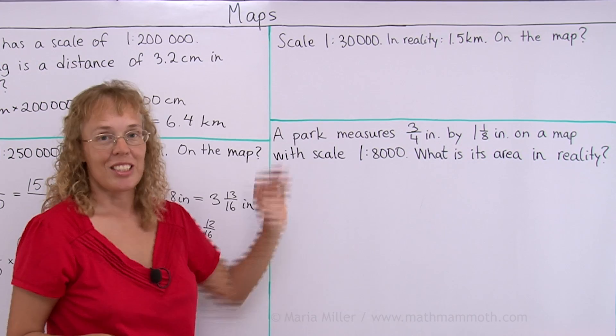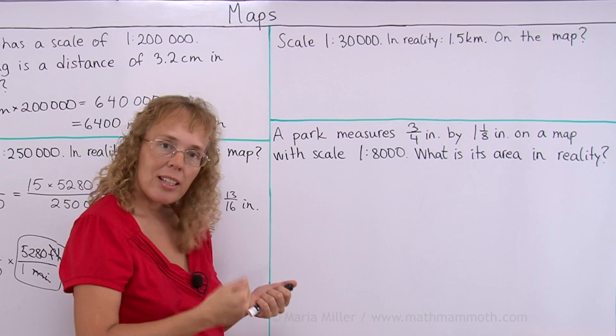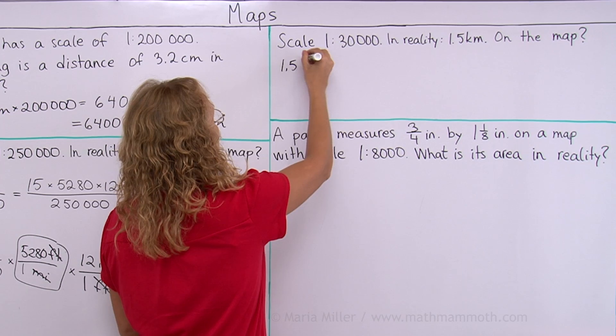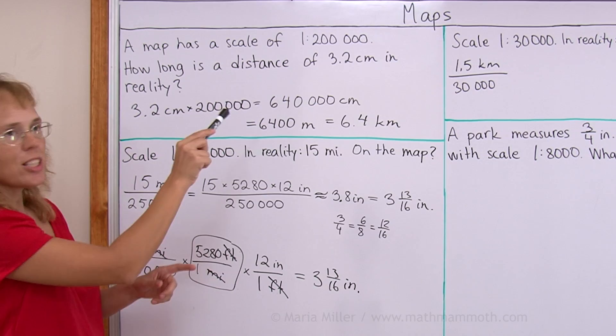Here, I have a problem with metric units. So this is an easy problem. Scale is 1 to 30,000. And in reality, we have a distance of 1.5 kilometers. How about on the map? We are going from reality to the map. So we need to make this distance of 1.5 kilometers smaller. So we will divide. 1.5 kilometers divided by 30,000. Now, I will do what I did here. I will change the 1.5 kilometers into meters and centimeters, then divide.